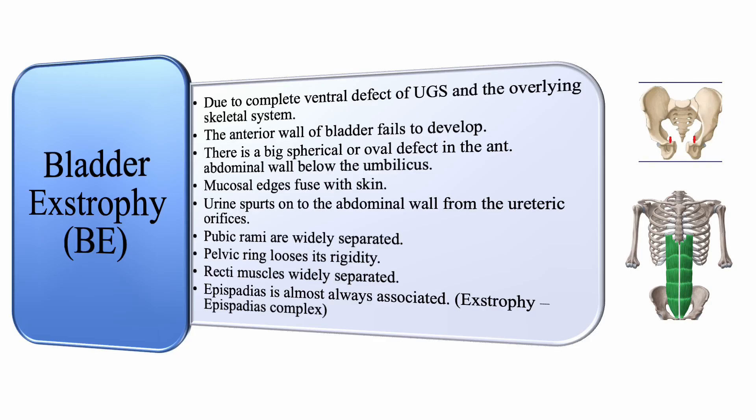Bladder exstrophy, also known as ectopia vesica, is one of the common congenital anomalies of the urinary bladder. It occurs due to a complete ventral defect of the urogenital sinus and the overlying skeletal system, so the anterior wall of the bladder fails to develop.